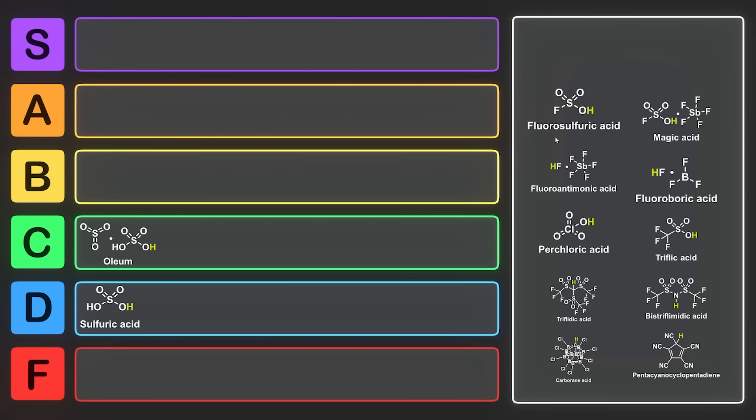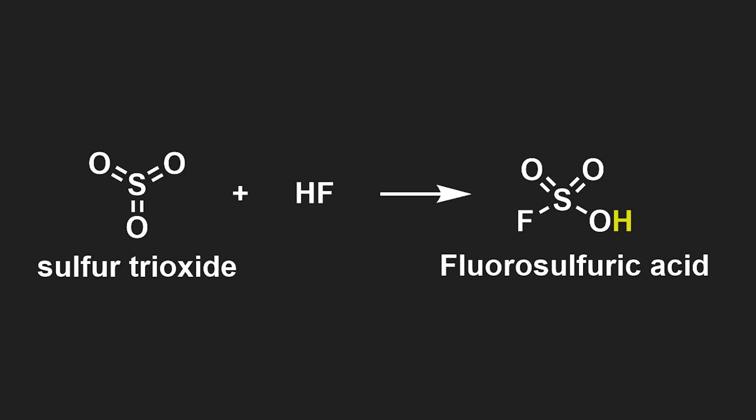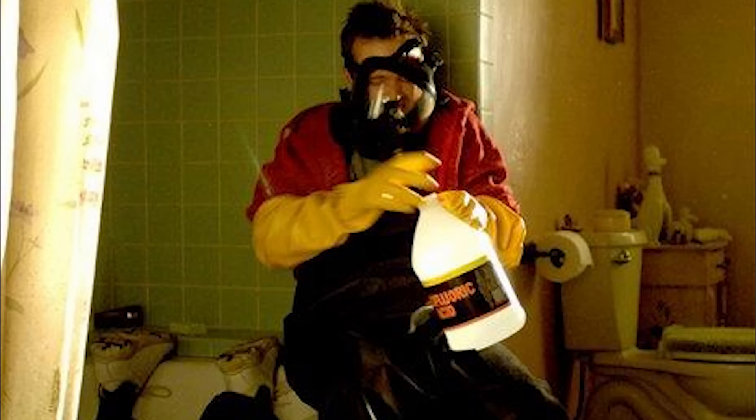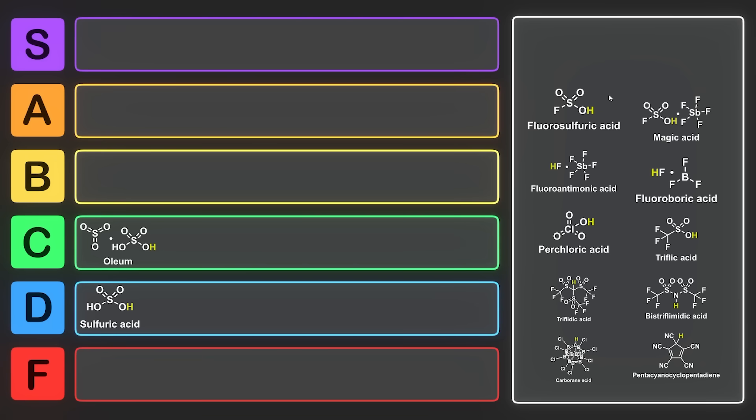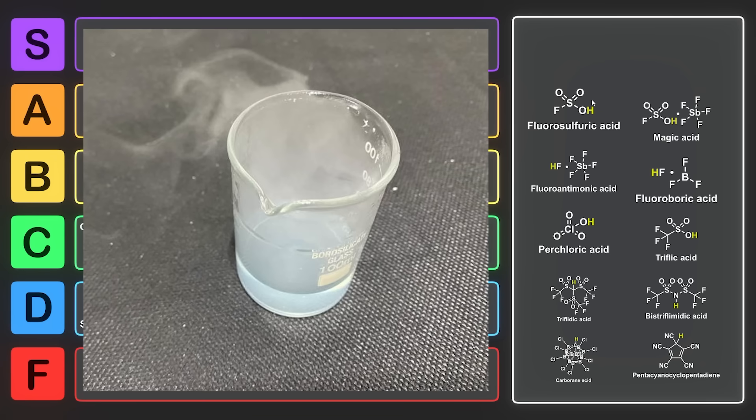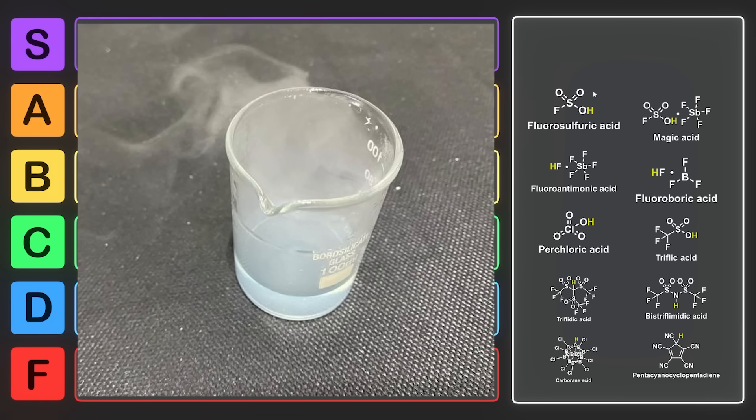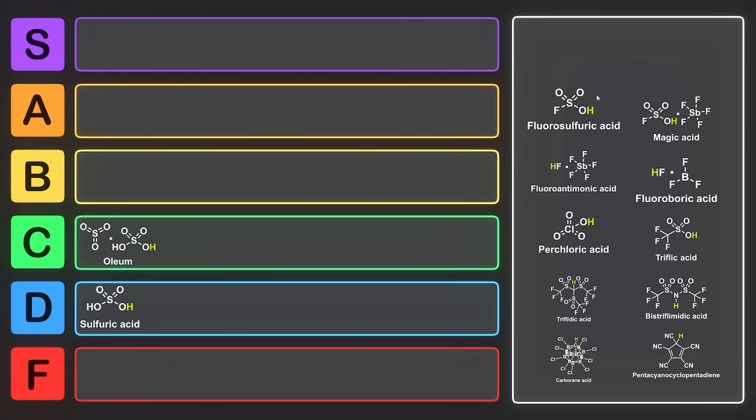The next superacid is fluorosulfuric acid. This one's a little bit terrifying to look at because it's literally made by treating sulfur trioxide with HF. That's right, dissolving bodies HF. That's scary acid. Fluorosulfuric acid has a pKa of minus 10. That's a very, very strong acid. And this compound is a liquid which can also be used for all sorts of acid-mediated reactions. Believe it or not, this is highly toxic. Who could have guessed?